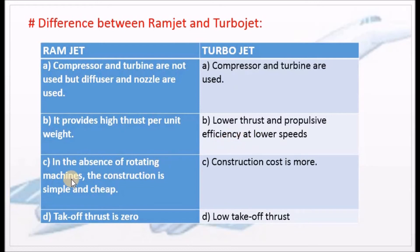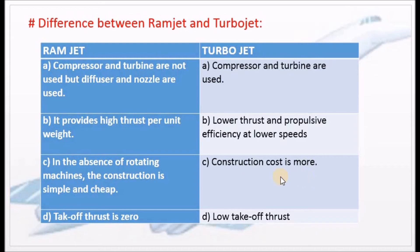In the absence of rotating machines in a Ramjet, construction is simple and cheap. In contrast, the construction cost of a Turbojet is more.